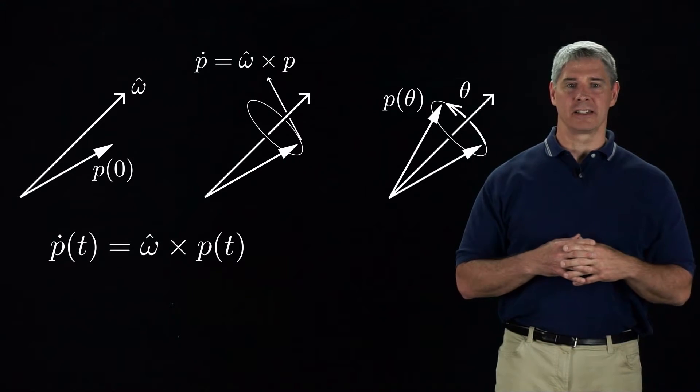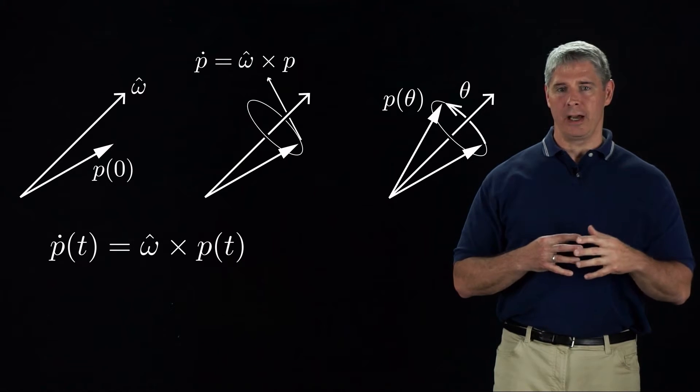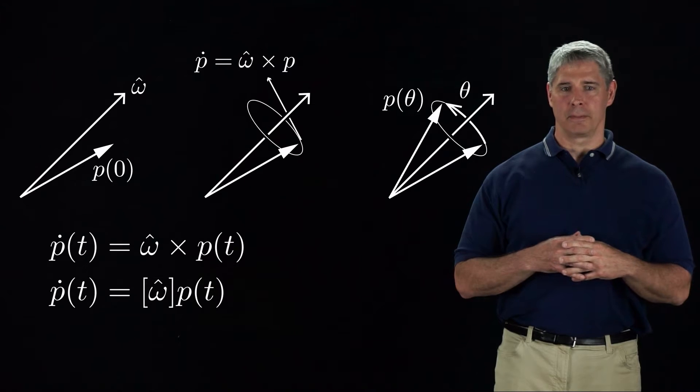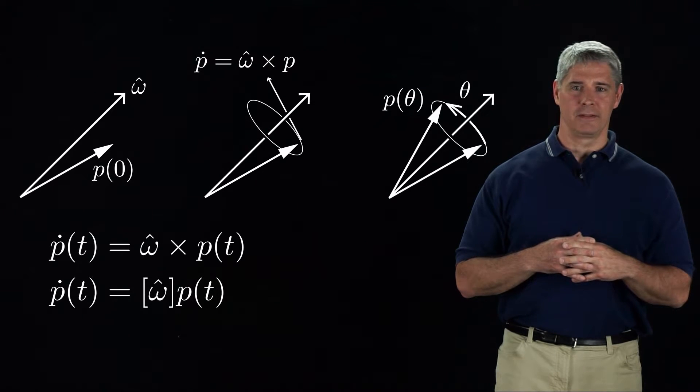The angular velocity is constant. Using our 3 by 3 skew symmetric matrix notation, this becomes p dot of t equals bracket omega hat times p of t.